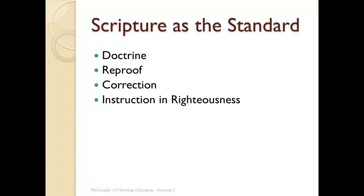Correction is where you look at your map and say, 'Okay, if we're in Texas, we need to get on this road and take this interstate to get to Iowa.' If you have GPS and you miss a turn, it says 'Recalculating' and gives you a different way to reach your destination — that's the correction. And instruction in righteousness is like making sure you keep following the I-75 signs — the Bible tells us how to live so that you don't fall into sin or go off the path again.